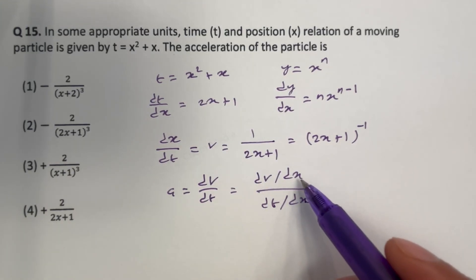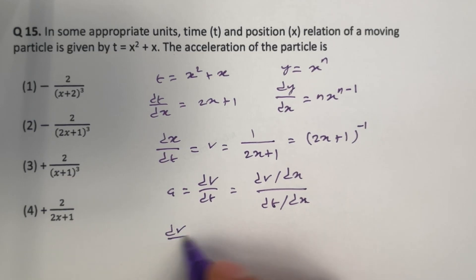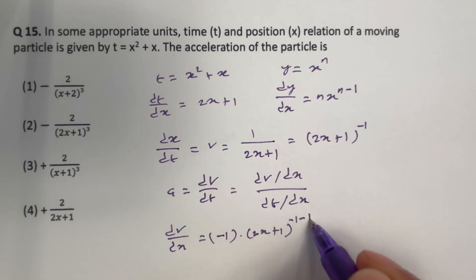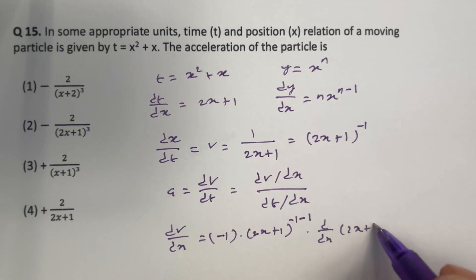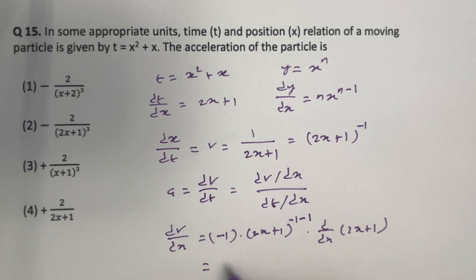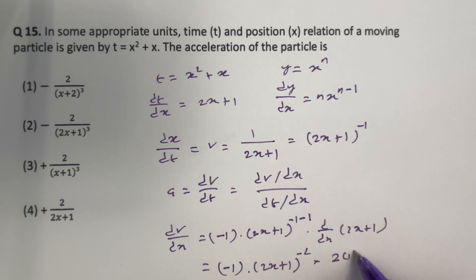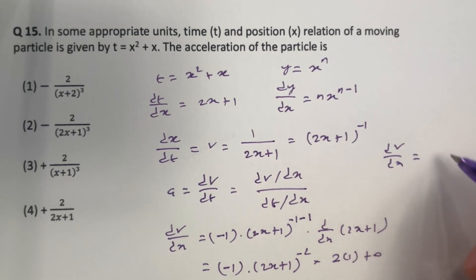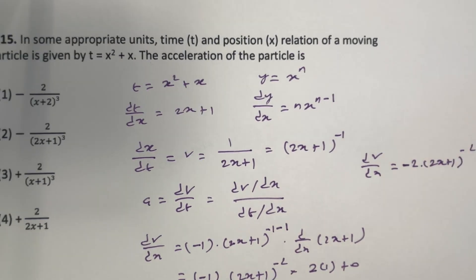So dv by dx is what we need to get. Therefore, dv by dx is equal to minus 1 times (2x plus 1) to the power minus 1, and then the derivative of (2x plus 1) with respect to x. This becomes minus 1 times (2x plus 1) to the whole power minus 2, multiplied by 2 times 1 plus 0. Therefore, dv by dx is equal to minus 2 times (2x plus 1) to the whole power minus 2.